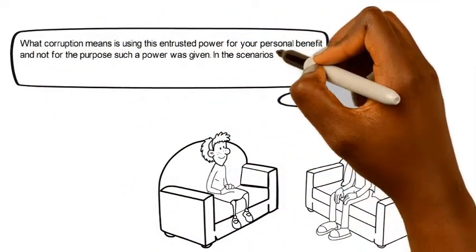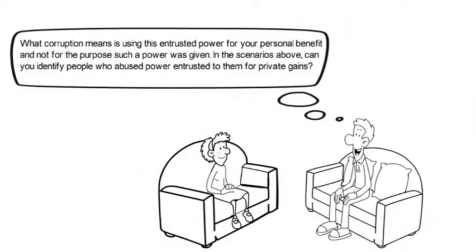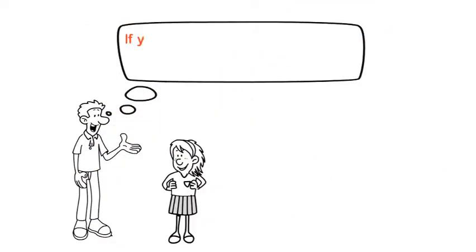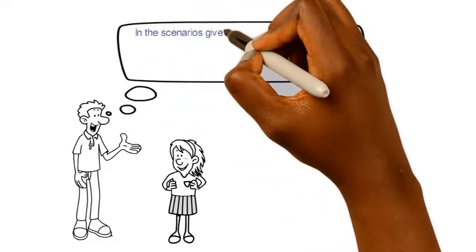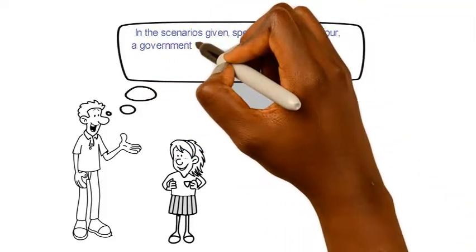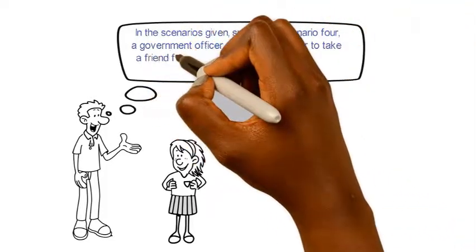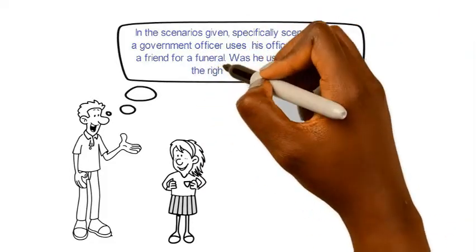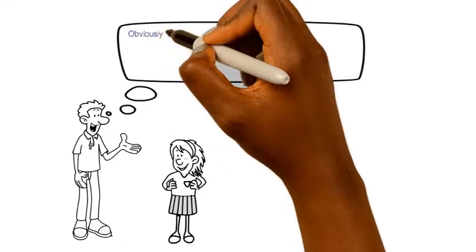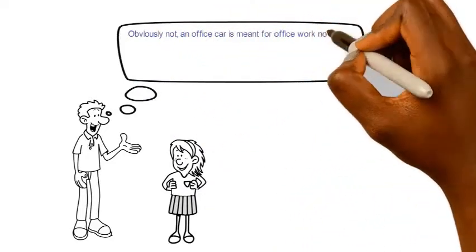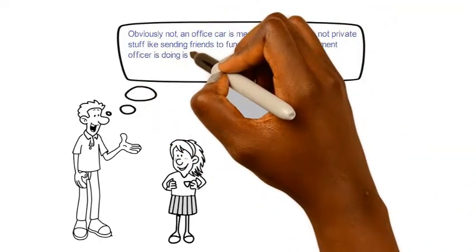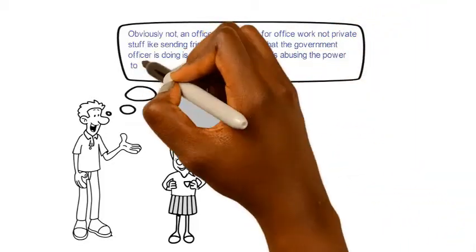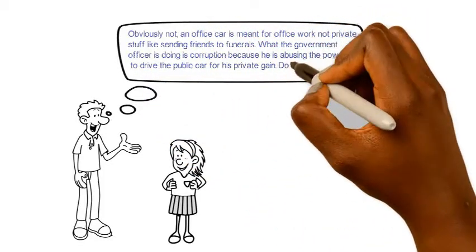In the scenarios above, can you identify people who abused power entrusted to them for private gain? In Scenario 4, a government officer uses his office car to take his friends to a funeral. An office car is meant for office work, not private matters like sending friends to funerals. What the government officer is doing is corruption because he is abusing the power to drive the public car for his private gain.